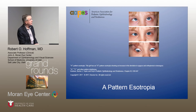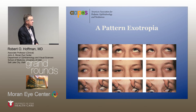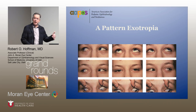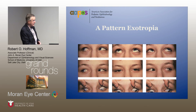This patient has A pattern esotropia: large angle esotropia in up gaze, smaller esotropia in primary, and the patient is essentially ortho in down gaze. A patient with A pattern exotropia shows large angle exotropia in down gaze, smaller exotropia in primary, and is essentially ortho in up gaze. You start to see over-depression in the oblique gazes — the eye goes right down, much more pronounced in gaze down and right, and gaze down and left.